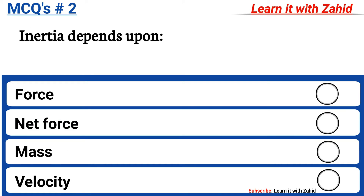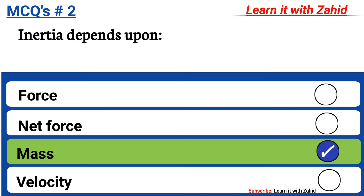Inertia depends upon: option A force, option B net force, option C mass, option D velocity. The correct answer is option C, mass.